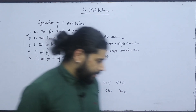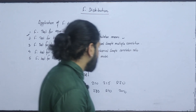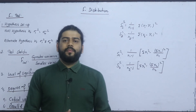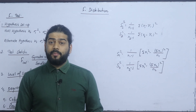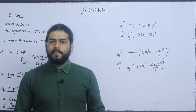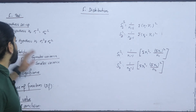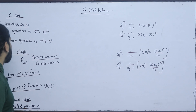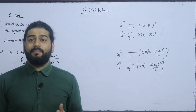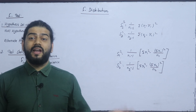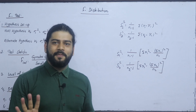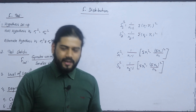Now we have to do F calculator. F calculator is the first part — in this one we have to choose the F-test. The test is the same — see the test pattern. Our first step is going to be the null hypothesis setting. There is null hypothesis — the variance, variance, variance. This is the variance test.